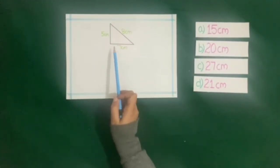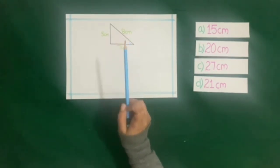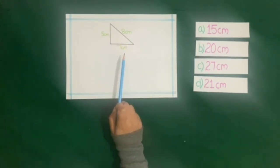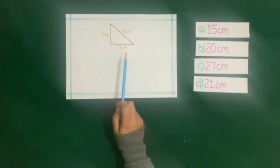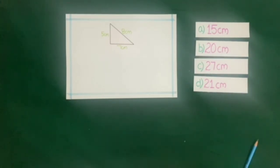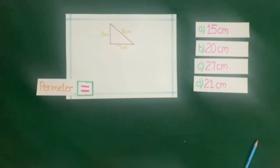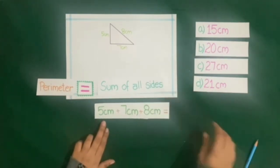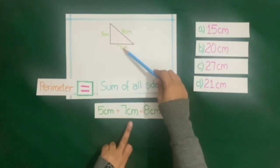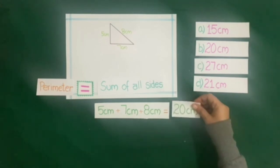Here a triangle is given whose sides are 5 cm, 8 cm, and 7 cm. We have to find the perimeter of this triangle. Four answers are given and we have to choose the correct answer. We already know that perimeter is equal to sum of all sides. So sum of all sides is 5 cm plus 7 cm plus 8 cm, which is equal to 20 cm.